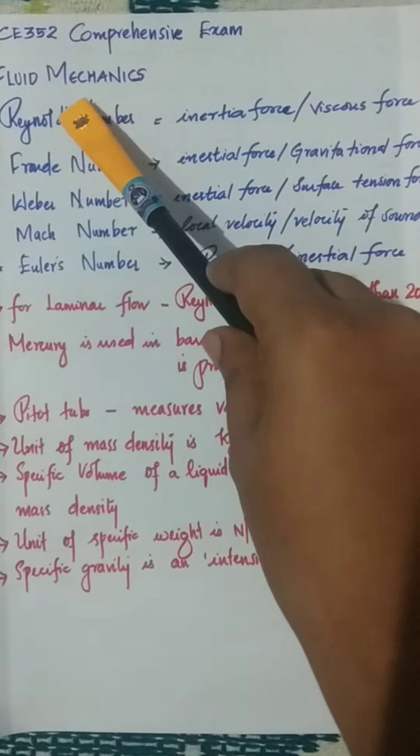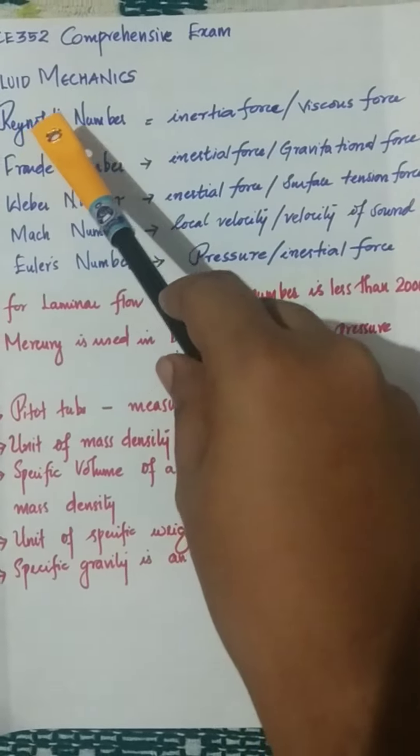To start with the various numbers: Reynolds number, Froude number, Weber number, Mach number, and Euler number.